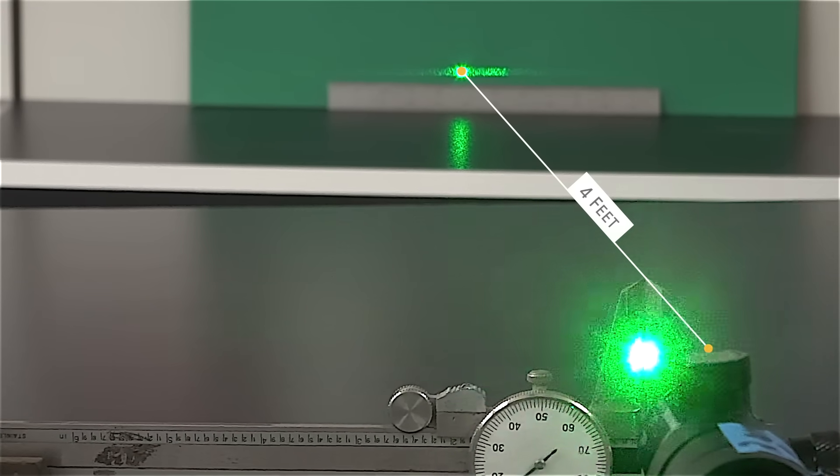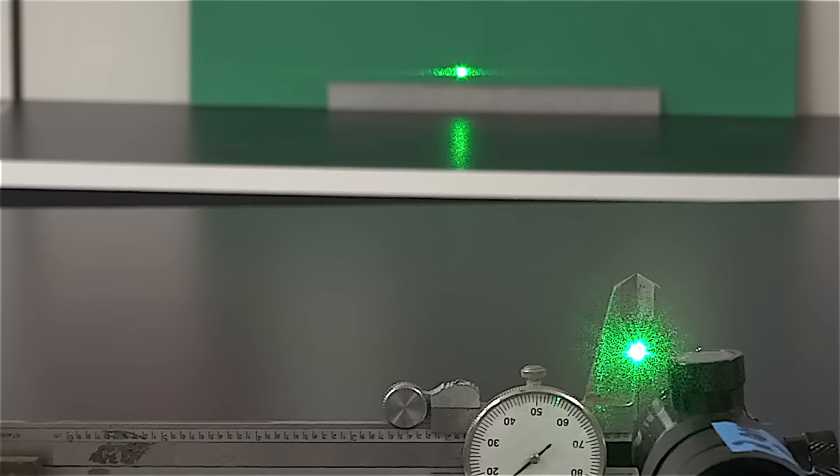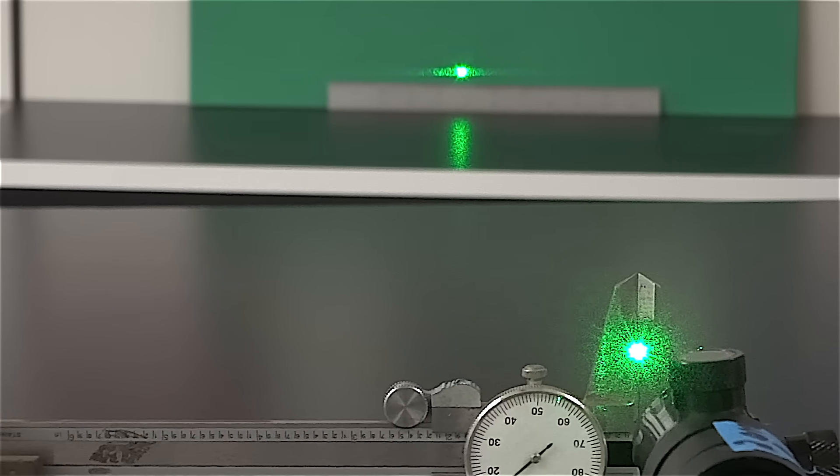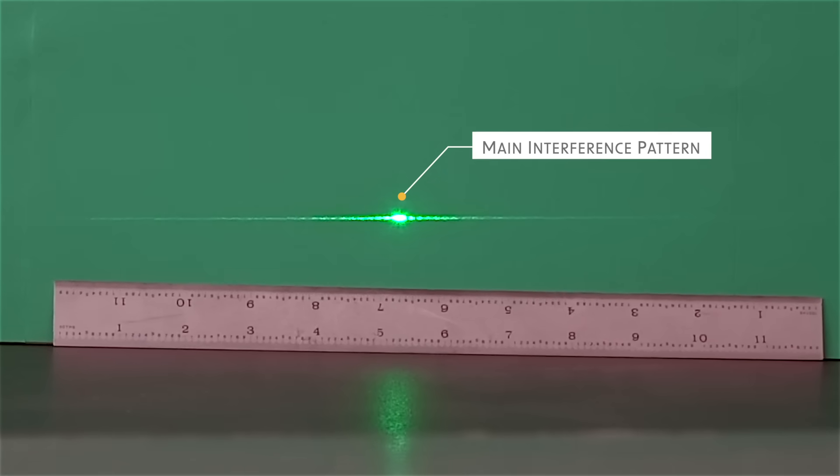Turn on the laser and aim it directly at the slit. If the laser is perpendicular to the slit, you will see one main interference pattern.